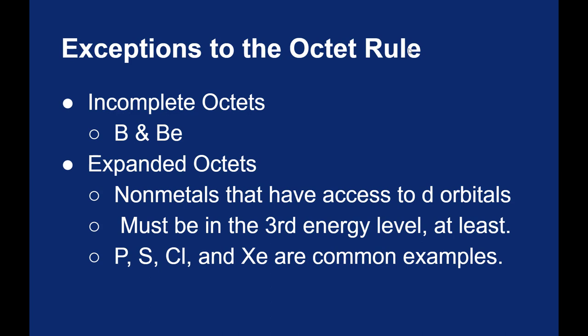The elements that you see most commonly expand their octet are phosphorus, sulfur, and chlorine. They're all in that third period of the periodic table. And then xenon can also form some compounds. And xenon as a noble gas has to expand its octet if it's going to form any compounds because xenon already has an octet in its natural state. So this knowledge of expanded octets, let me ask a question.